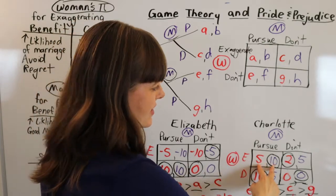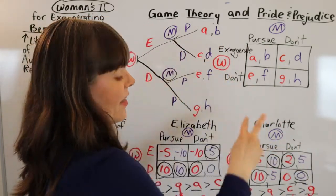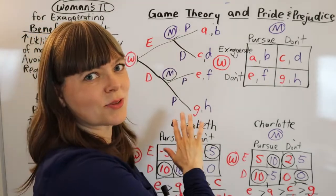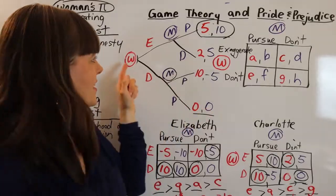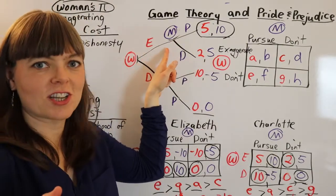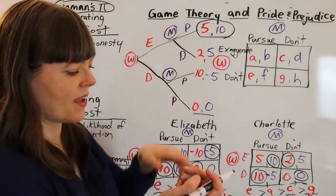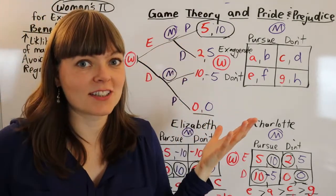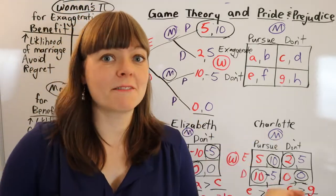So what we want to do is we want to test these payoffs. If we put these payoffs at the end of this sequential moves game tree. And what we find out is that if you solve this for backwards induction, her optimal strategy is to exaggerate, his optimal strategy is to pursue. And that matches with the arguments she's making.